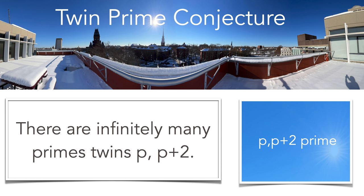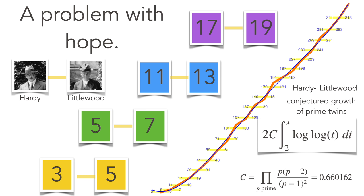The twin prime conjecture, also very famous, part of the Landau problems, asks are there infinitely many prime twins. It's a problem which also has strong statistical evidence. The density of the twin primes has been predicted also by Hardy and Littlewood.